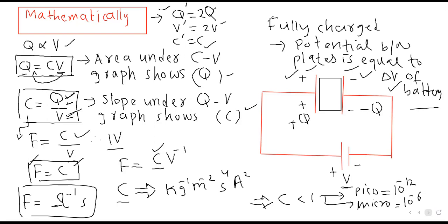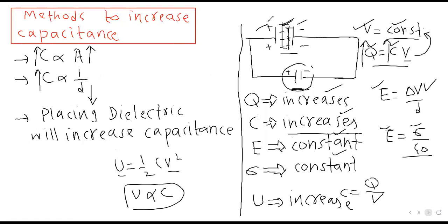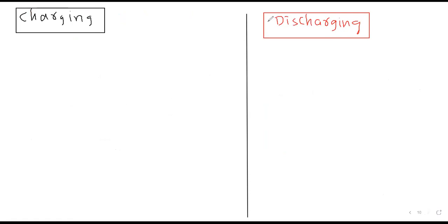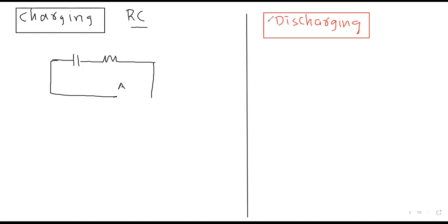Charging اور discharging کے لیے RC circuit use ہوتا ہے — یعنی ایسا circuit جس میں resistance اور capacitor دونوں connected ہوں۔ Capacitor کو charge کرنے کے لیے circuit بند کرتے ہیں۔ Positive terminal والی plate positive اور negative terminal والی plate negative ہو جاتی ہے، current direction clockwise ہوتی ہے charging میں۔